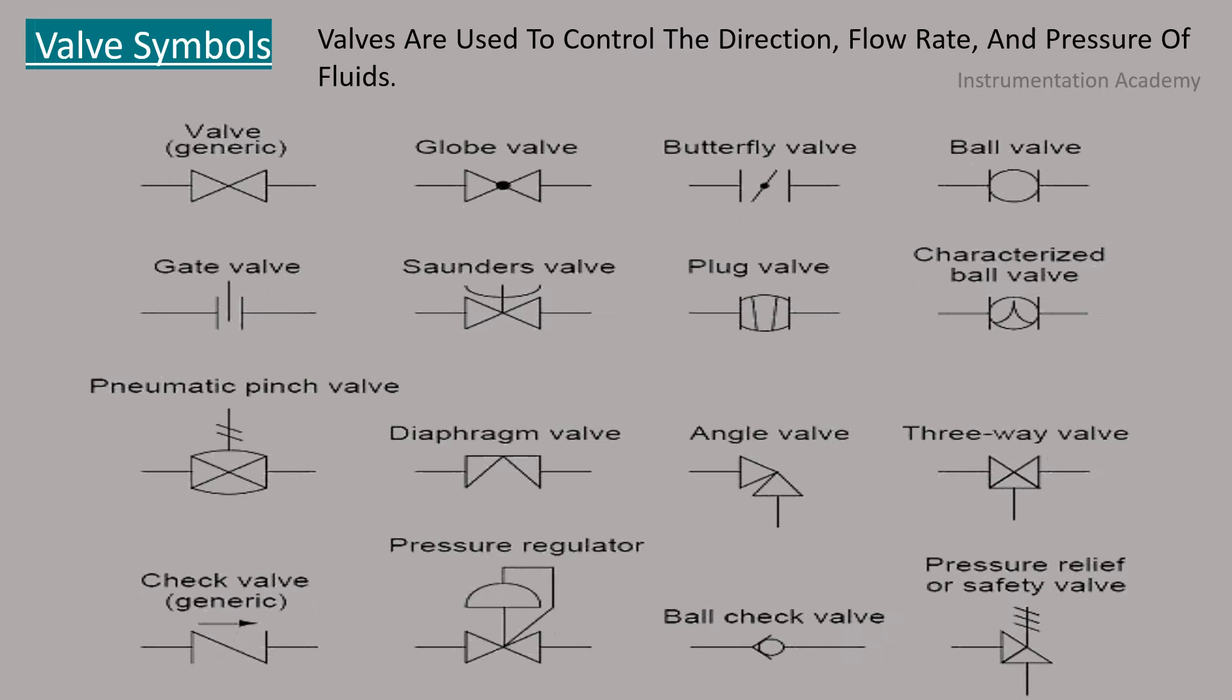Valve symbols. Valves are used to control the direction, flow rate and pressure of fluids. This is a symbolic representation of different types of valves in a P&ID. It should be noted that globe and gate valves will often be represented by the same valve symbol.